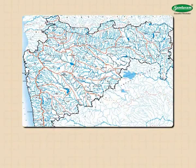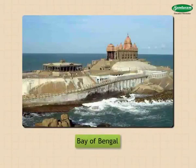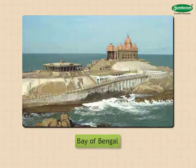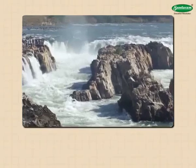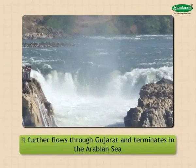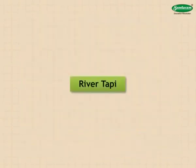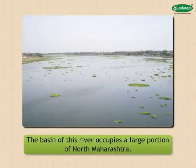Rivers in Maharashtra: the major rivers and their basins are shown in figures. Some rivers in Maharashtra flow westward and join the Arabian Sea; some are east-flowing rivers that flow into the Bay of Bengal. In the far eastern part of the state, there are some south-flowing rivers. River Narmada flows along the northern boundary of Nandurbar district and further flows through Gujarat, terminating in the Arabian Sea.